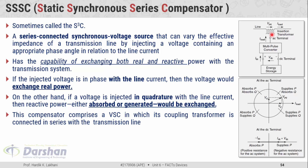This compensator comprises a voltage source converter whose coupling transformer is connected in series with the transmission line. The primary winding of the coupling transformer is connected in series with the line, whereas on the secondary side, the voltage source converter along with the energy storage element is connected. In the case of the STATCOM, the primary winding of the coupling transformer is connected in shunt with the line. That is the basic difference between the line diagram of STATCOM and SSSC.